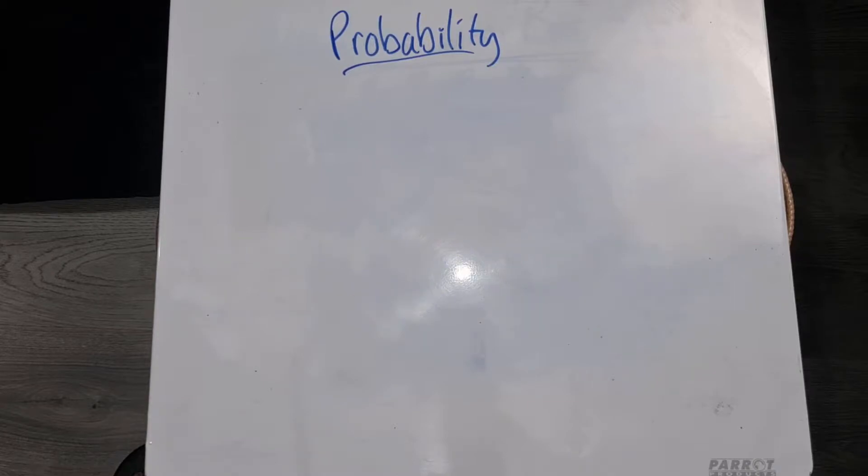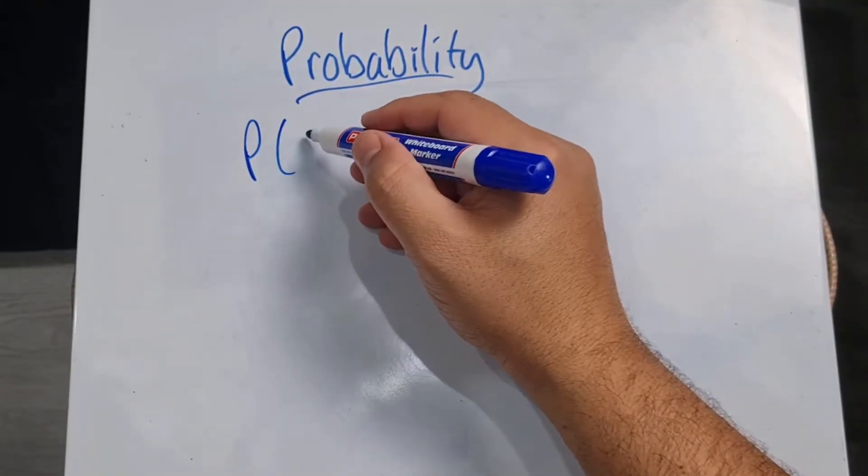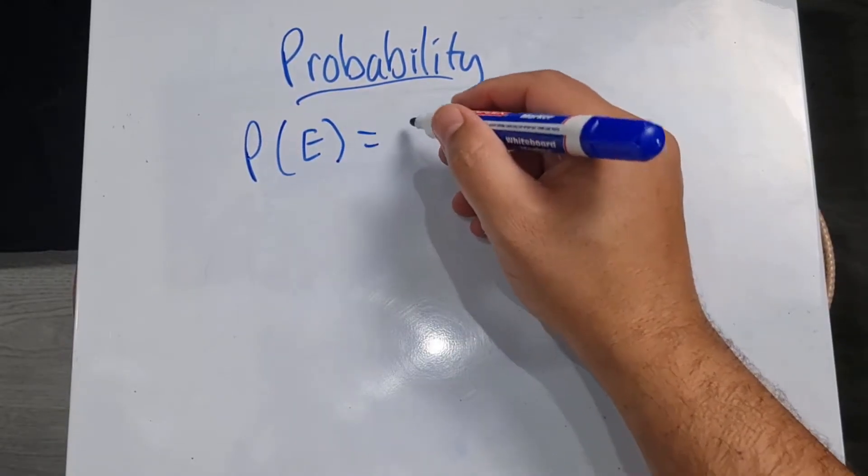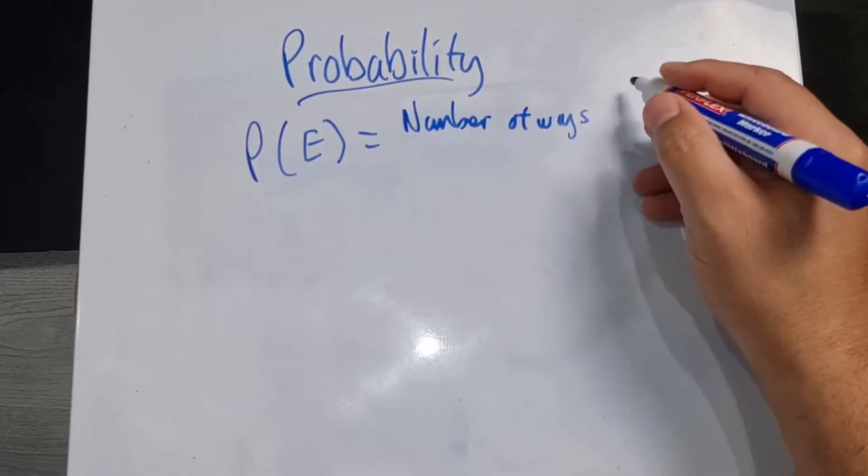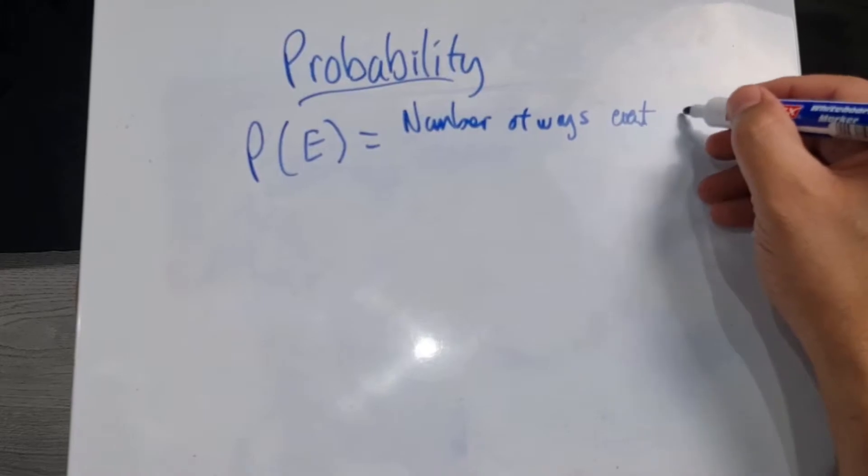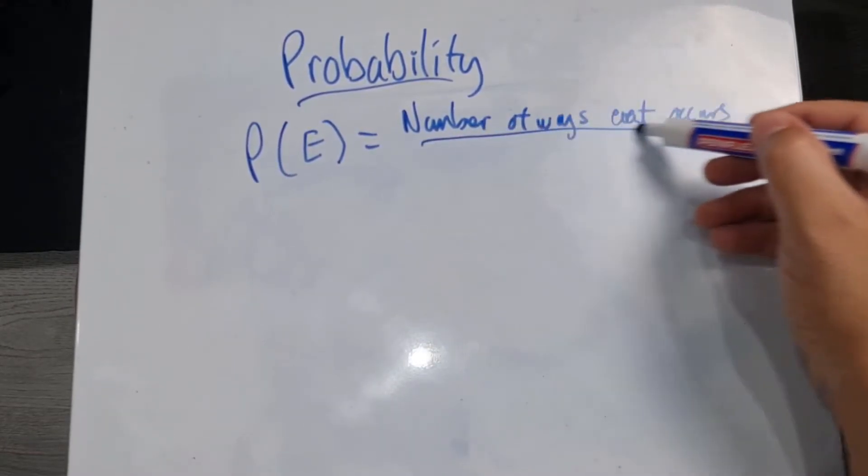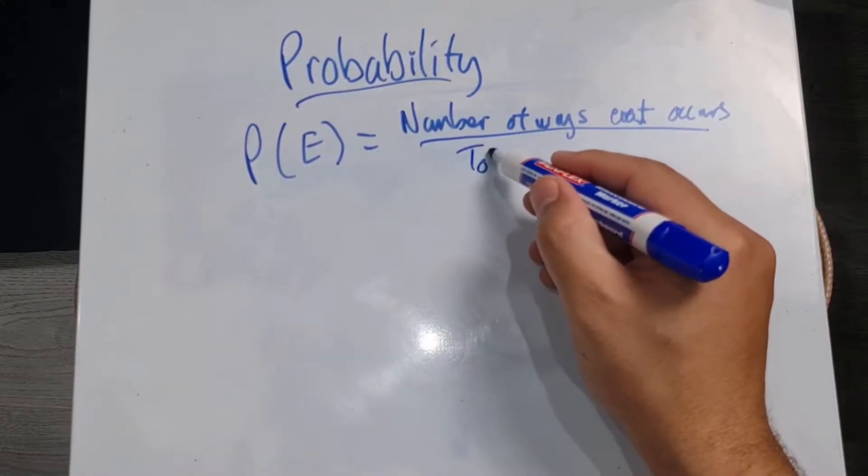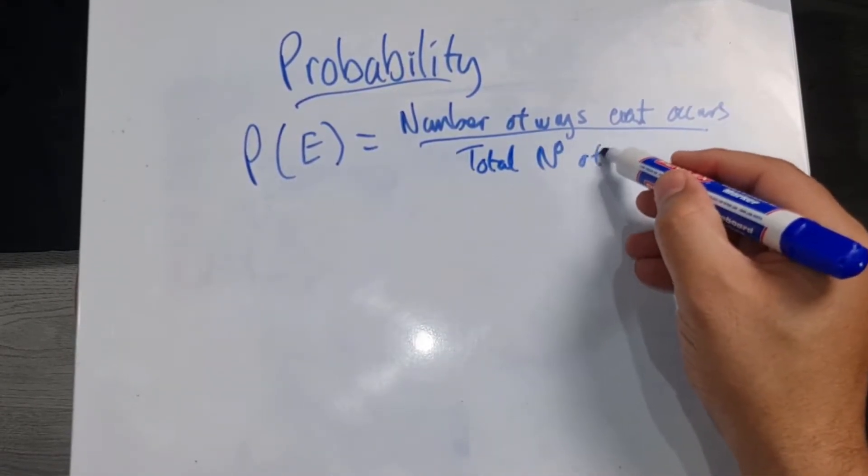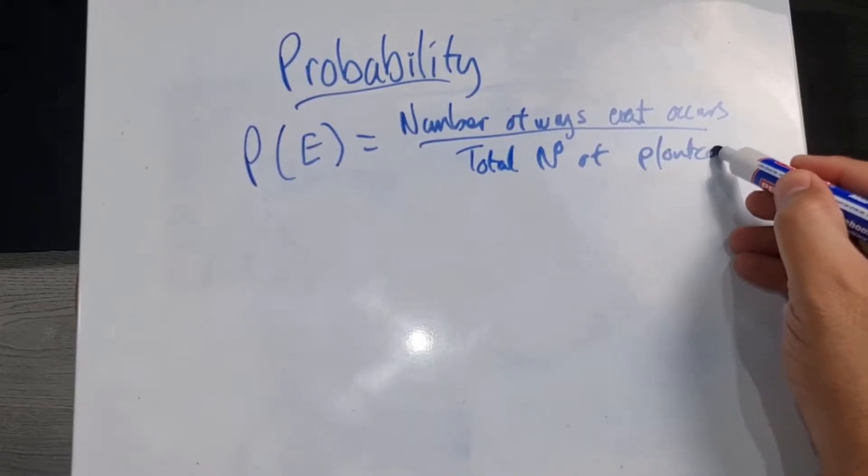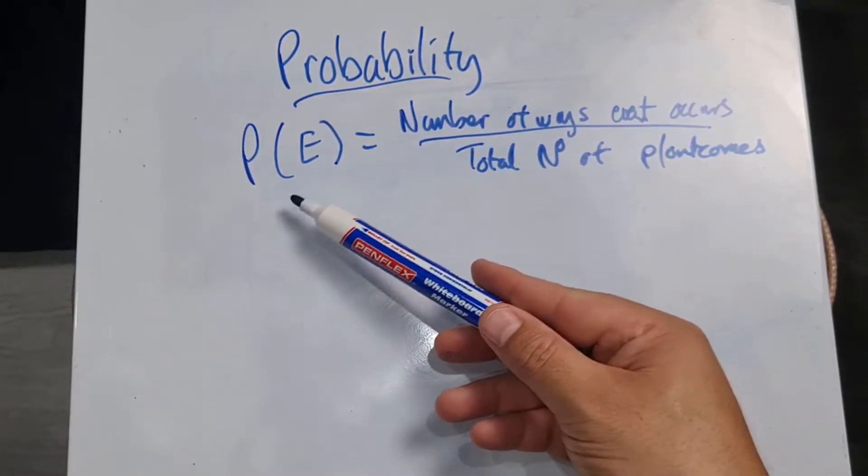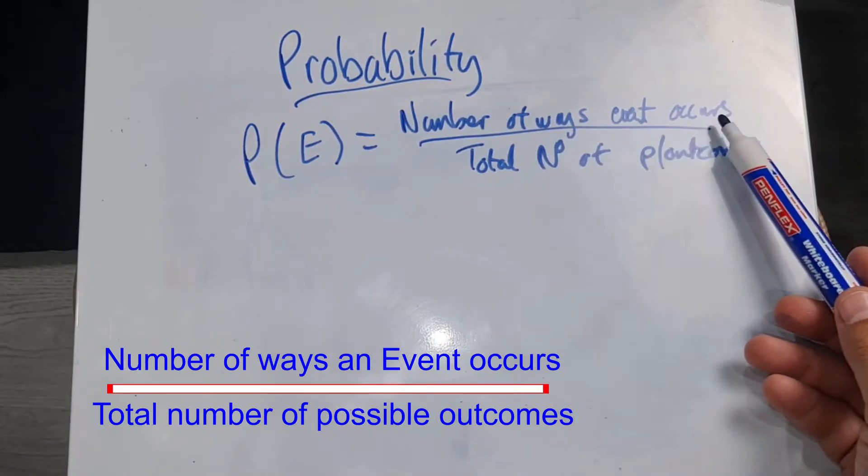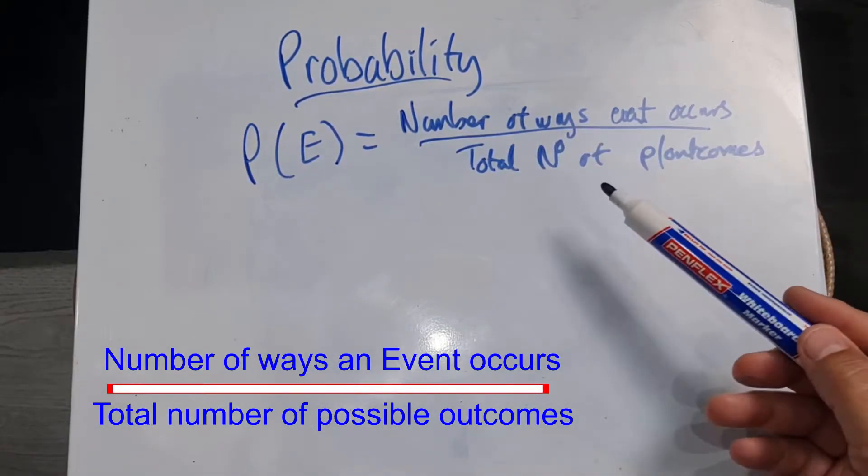So with probability, it can be calculated using a formula and we use the following. We say probability of the actual event, and we take the number of ways the event can occur and divide that by the total number of possible outcomes. In other words, in order to calculate our probability, we need to look at the number of ways the event can occur and divide it by the total number of possible outcomes.